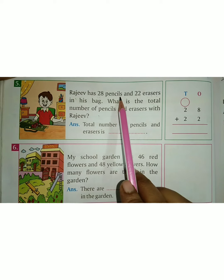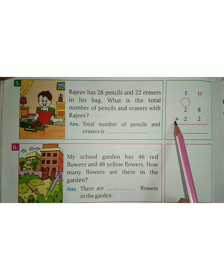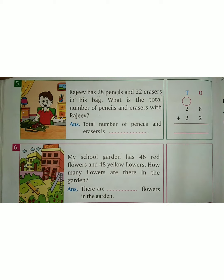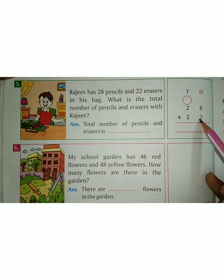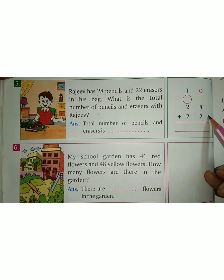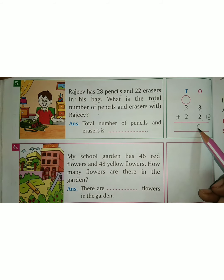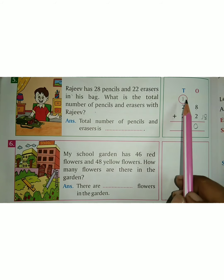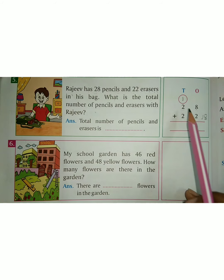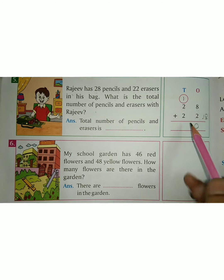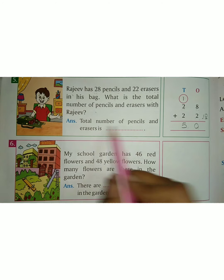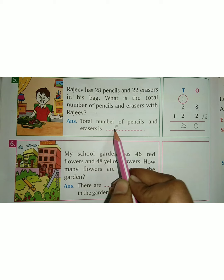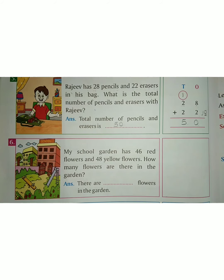28 pencils plus 22 erasers, that is 22. Now 8 plus 2 is 10. So this 0 we put here and this 1 is carry over. Now 1 plus 2 is 3, and 3 plus 2 is 5. So 50. Total number of pencils and erasers is 50.